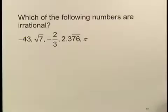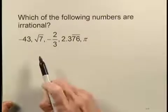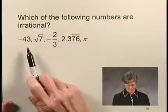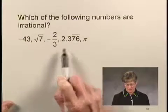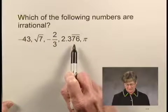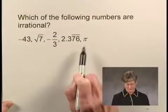This is an exercise that involves the real number system. We're asked the question, which of the following numbers are irrational? And we're given five numbers to look at: negative 43, square root of 7, negative 2 thirds, 2.376 where the digits 76 repeat, and the number pi.